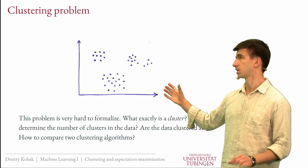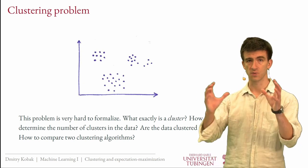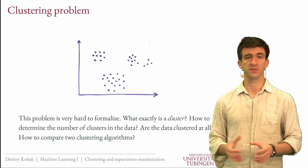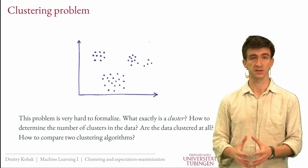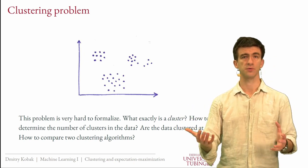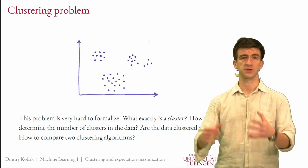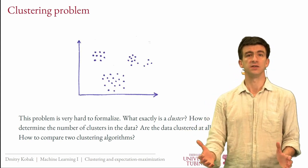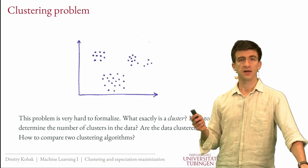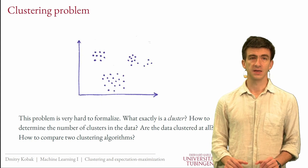Many questions arise: how many clusters are in the data? Is it three or four in this case? Or perhaps it's only one cluster — perhaps the data are not clustered at all. If you have two clustering algorithms and they give you some clustering results, how can you compare them? How can you choose the better one? In the prediction setting you use a test set, but here you have two clusterings — how do you decide which one is better? People sometimes say that clustering is not a science but an art, and there is some truth to it.